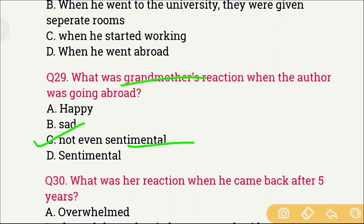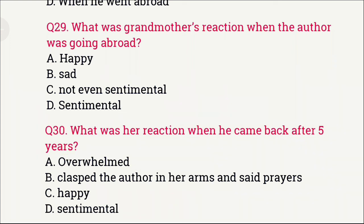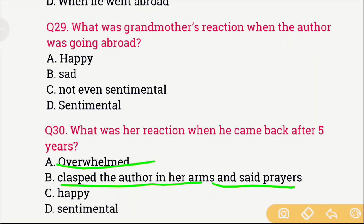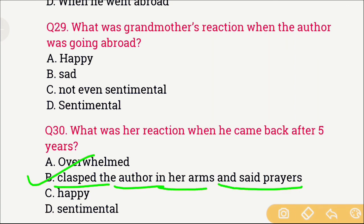Question number 30: What was the grandmother's reaction when the author came back after 5 years? The options are: A) Overwhelmed, B) Clasped the author in her arms and said prayers, C) Happy, and D) Sentimental. The right answer is option B — she clasped the author in her arms and said prayers. When the author returned after 5 years abroad, the grandmother hugged him, and as he embraced her, he could hear her prayers because she was always reciting prayers.